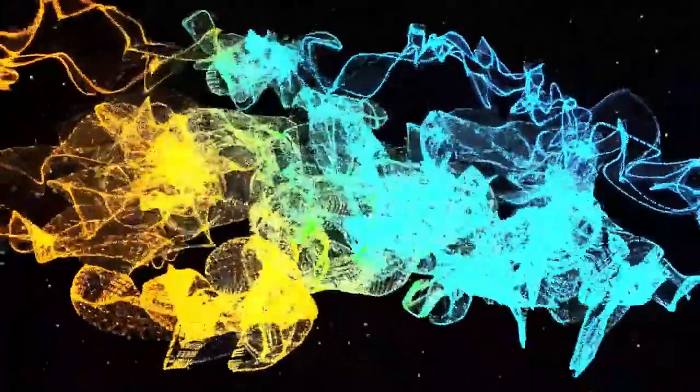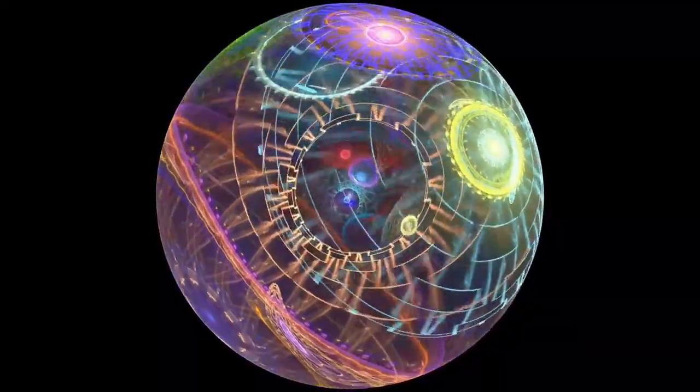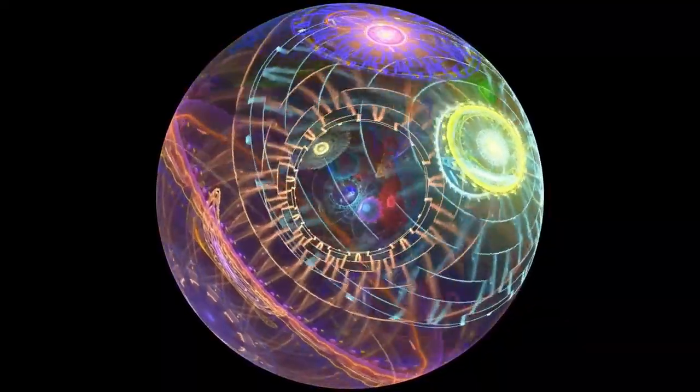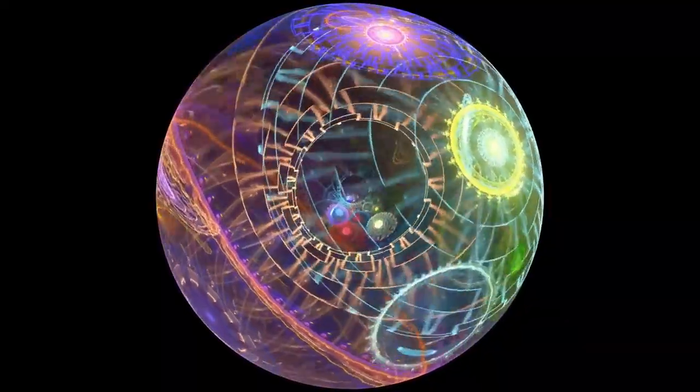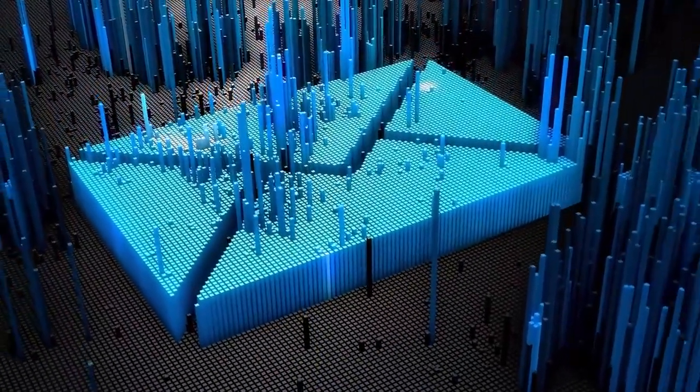The star appears to emit pulses of material that ripple outward, forming the distinctive ring patterns captured by Webb. This extraordinary find not only demonstrates Webb's accuracy, but also opens new questions about stellar life cycles and the forces sculpting their environments.